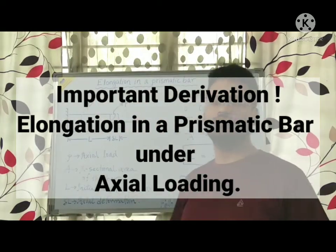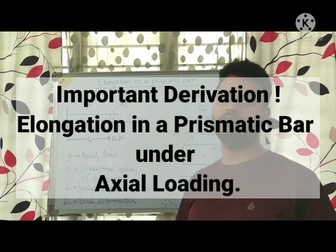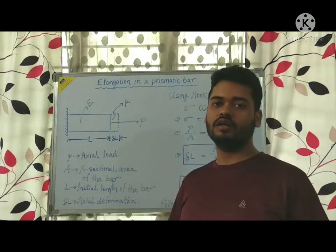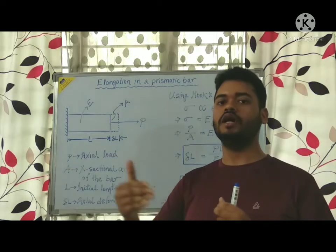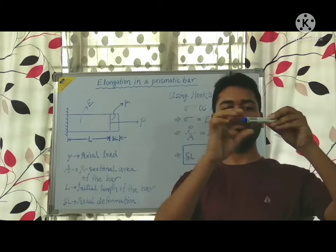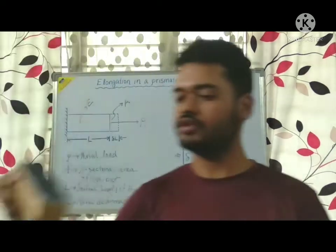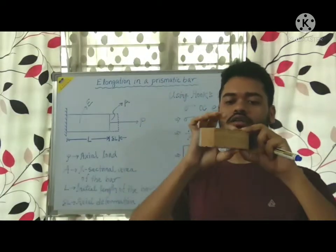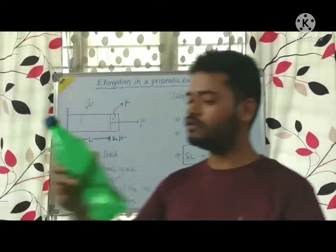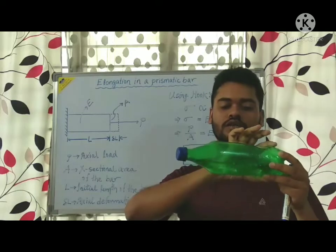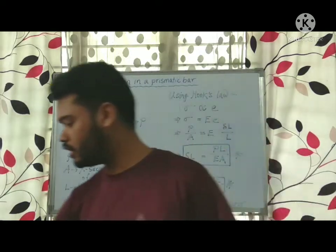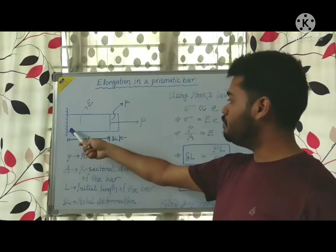Today I am going to discuss the axial deformation in a prismatic bar. If the cross section of a member is the same along its axis, then it is called prismatic. This is a member whose cross section is constant along its axis, so it is prismatic. In this bottle, you can see that the cross section varies along the axis, so it is not prismatic.